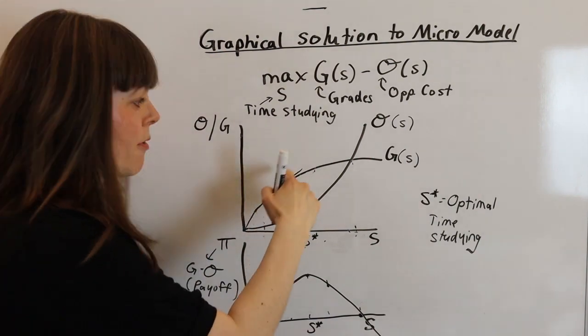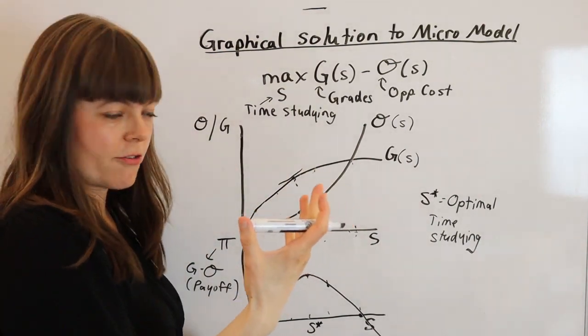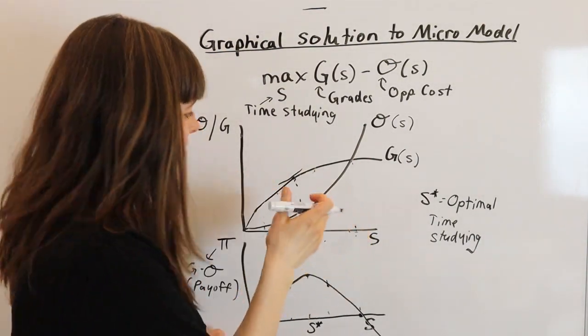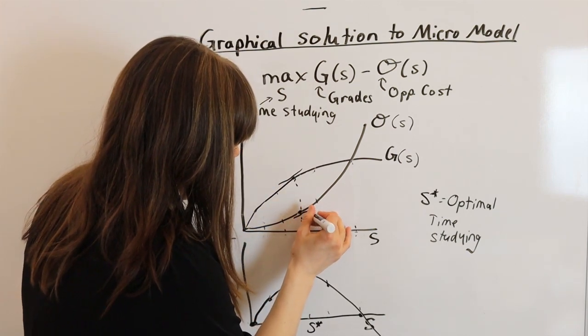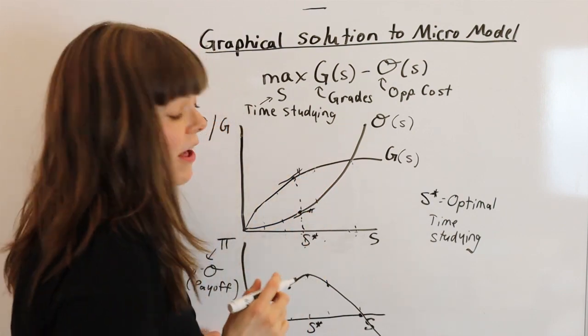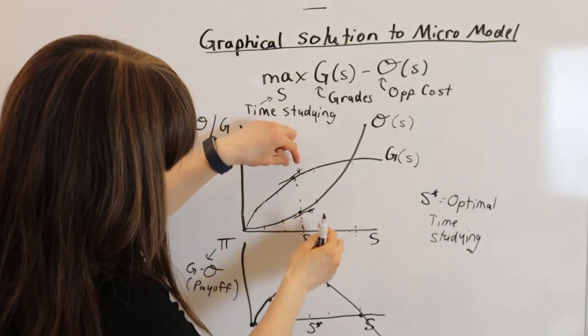the marginal benefit or marginal grade improvement from that extra 10 minutes of studying is exactly equal to the marginal cost of the value of the time we're giving up. So these two, we've got marginal benefit.